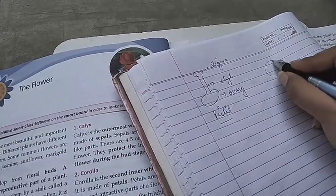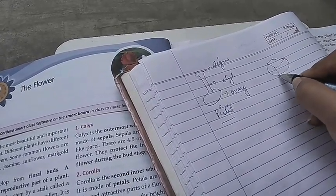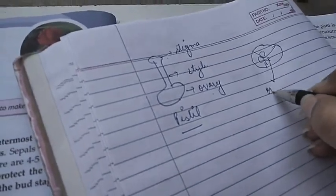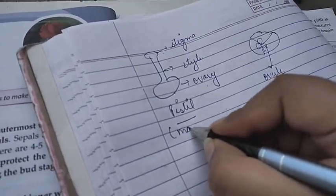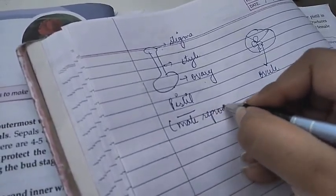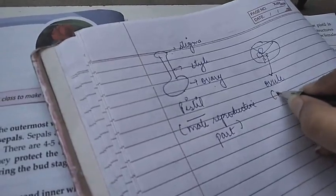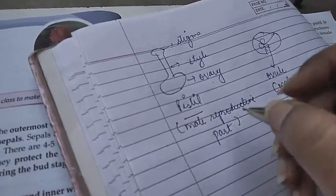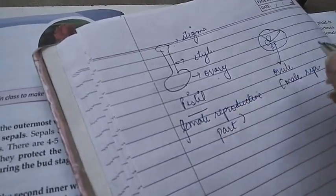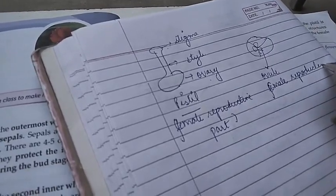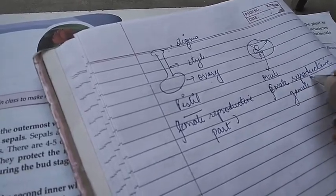When you see the transverse section of the ovary, you will observe these tiny circular structures. In the middle part, this is the ovule. The ovule is the female reproductive part of a flower, and ovule is the female reproductive gamete or cell.